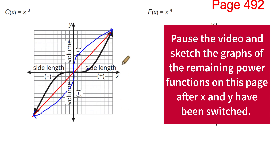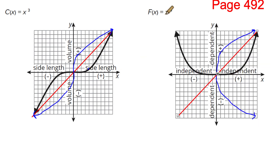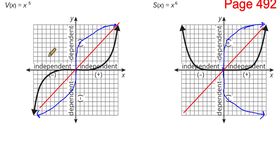My sketches won't be the best, so yours don't have to be either. Here's what I got for the fourth power, x to the fourth. Then x to the fifth looks a lot like x to the third — like x cubed. And x to the sixth looks similar to the fourth. Now the next thing we want to do is look at whether these — they're called inverses, which is the blue lines when you switch x and y — are functions themselves.